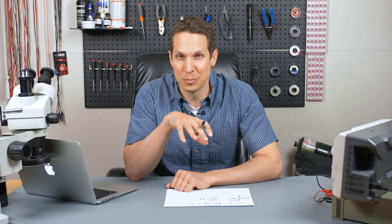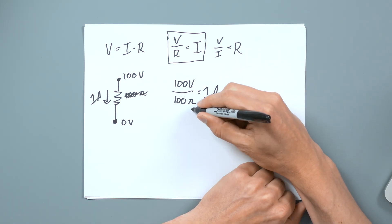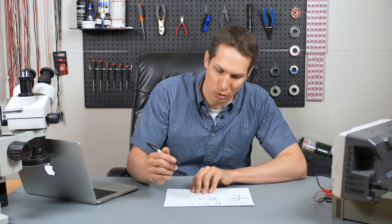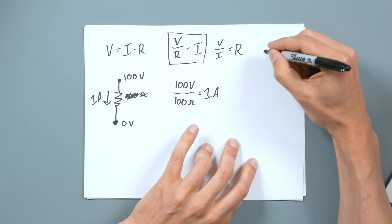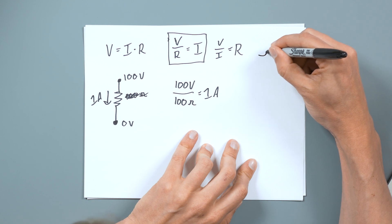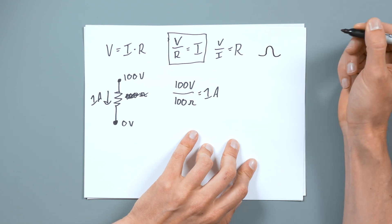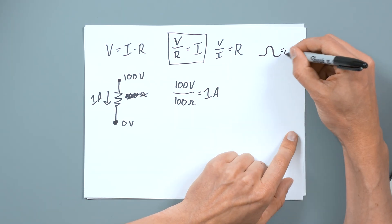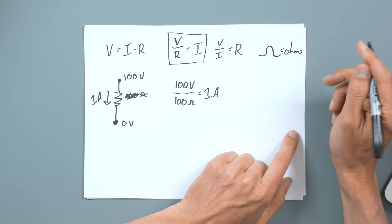So this is pretty simple. And you notice I use the word Ohms. And it's, I apologize, my handwriting is so bad. But this is a Greek Omega. That is what that symbol is. That means Ohms. And that is the measurement of resistance.